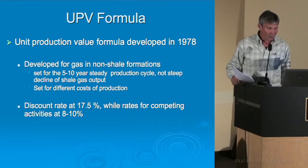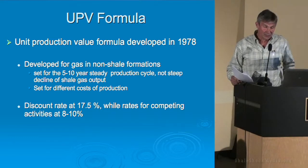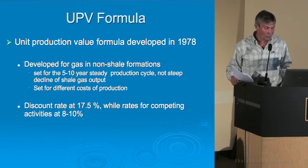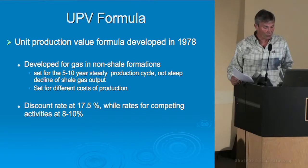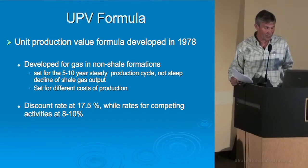The unit production value (UPV) formula was developed in 1978 for non-shale gas. The type of gas at that time came from pocket formations in sandstone and limestone, and the decline curve for that gas is fairly steady production for five-plus years before it slides off slightly. For shale gas, the most production occurs the minute they hit a frack, and then it drops significantly after that. There is a whole different way of calculating the unit production value when talking about shale gas versus non-shale gas.